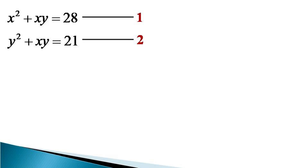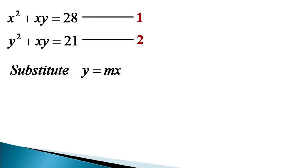Now while looking at these equations, we can notice that both these equations are homogeneous. To solve these homogeneous simultaneous equations, a useful substitution is to substitute one variable as equal to a constant multiplied by the second variable. So here we substitute y = mx and give this substitution the number equation 3.